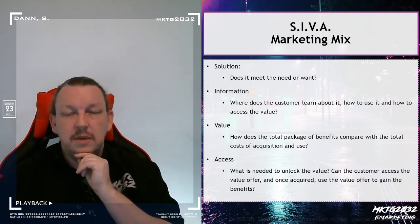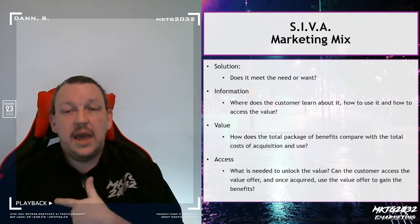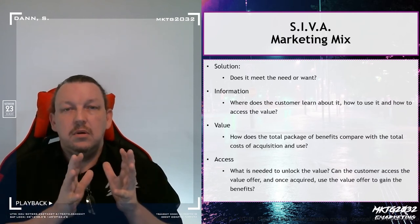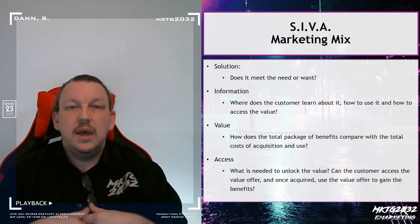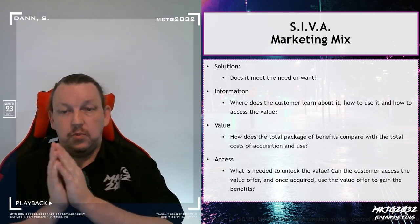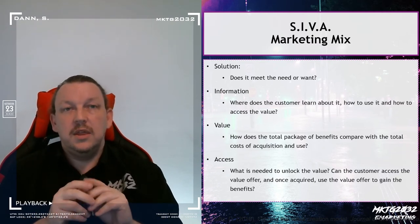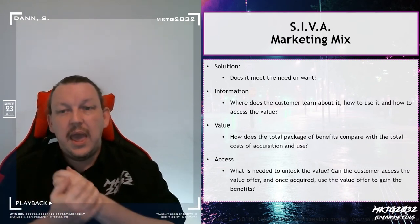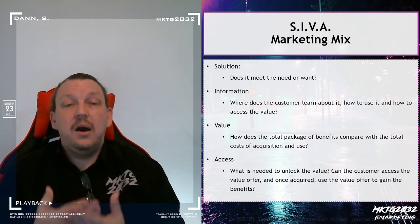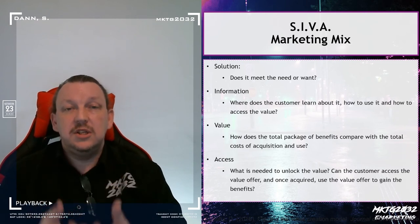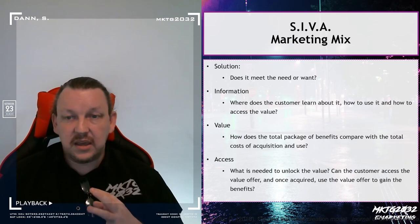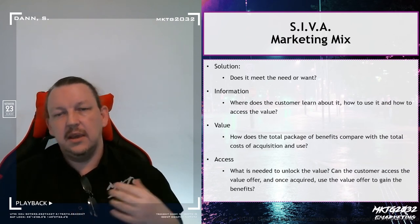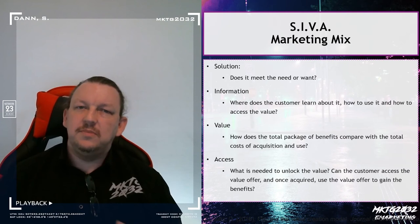Two aspects to think about in terms of the ETA are access and information. Within the value offer, what makes an offering that has value into actual value — if you're relying on customer co-creation — is whether the customer has the operant resources necessary to co-create the final value element. And if they don't, how can you inform them, how can you teach them, how can you give them the knowledge they need to unpack and access the value? SIVA is really useful because it brings you back into thinking about what does my product design need, what does my value offer require.